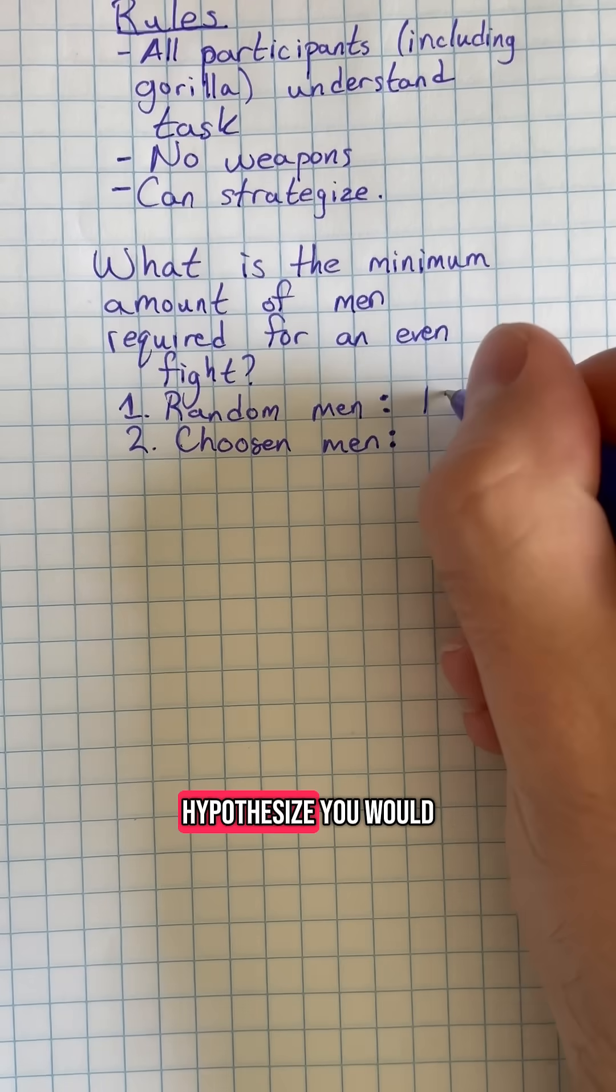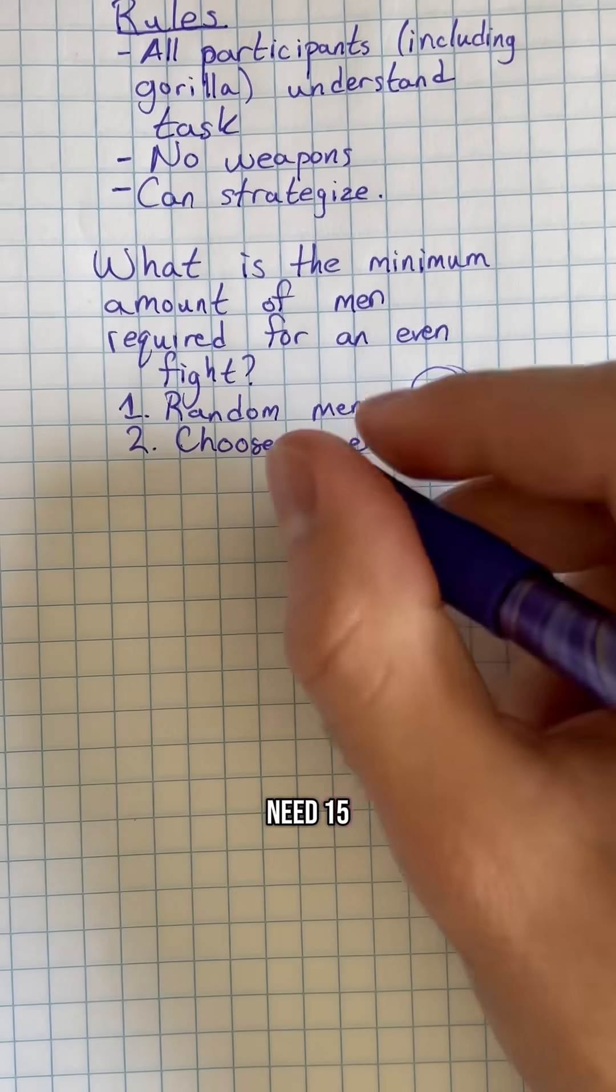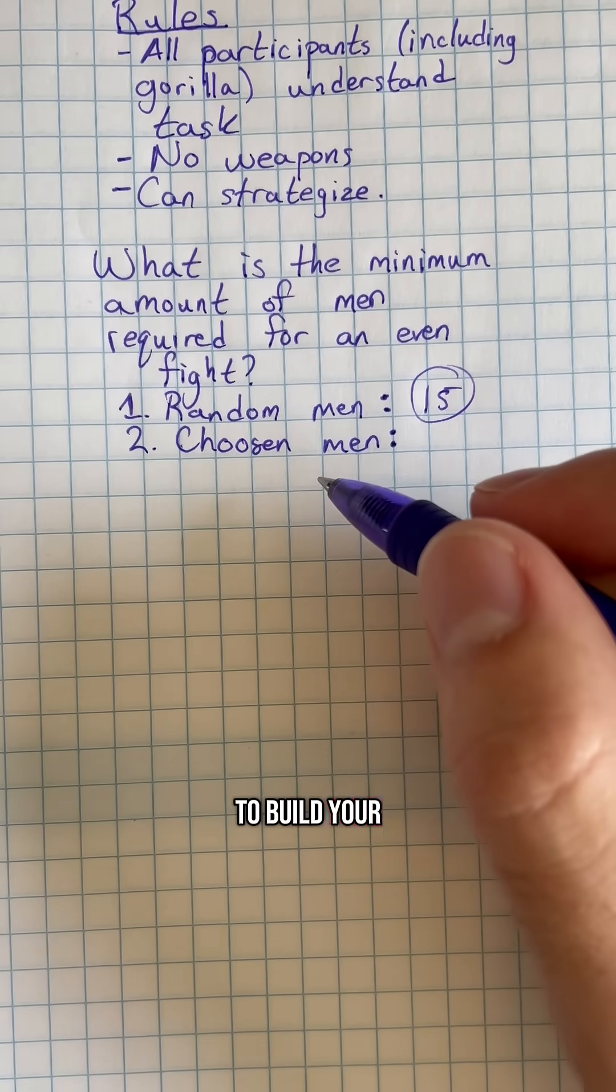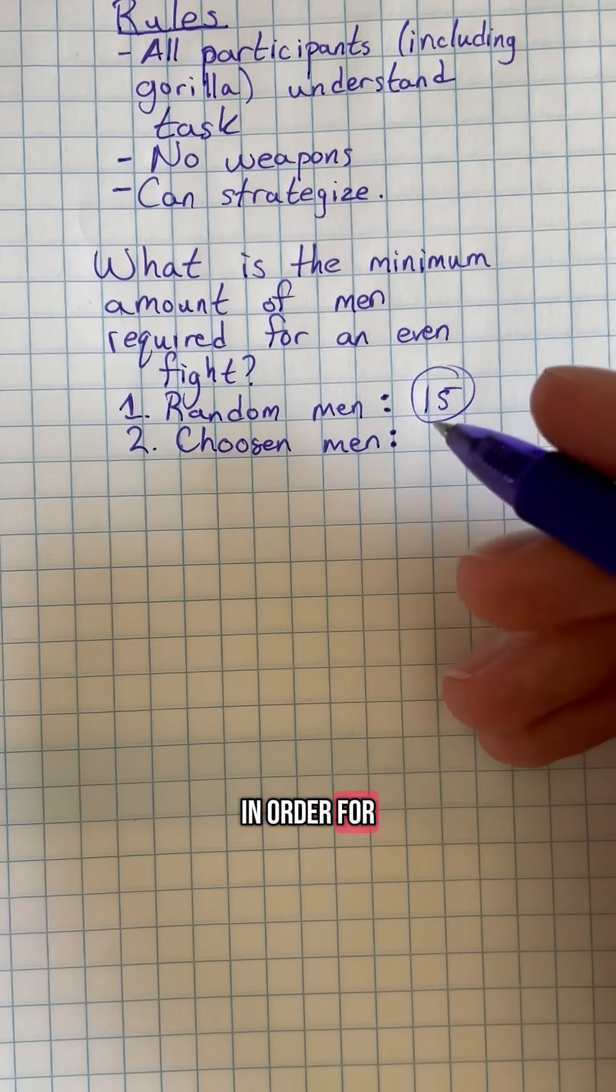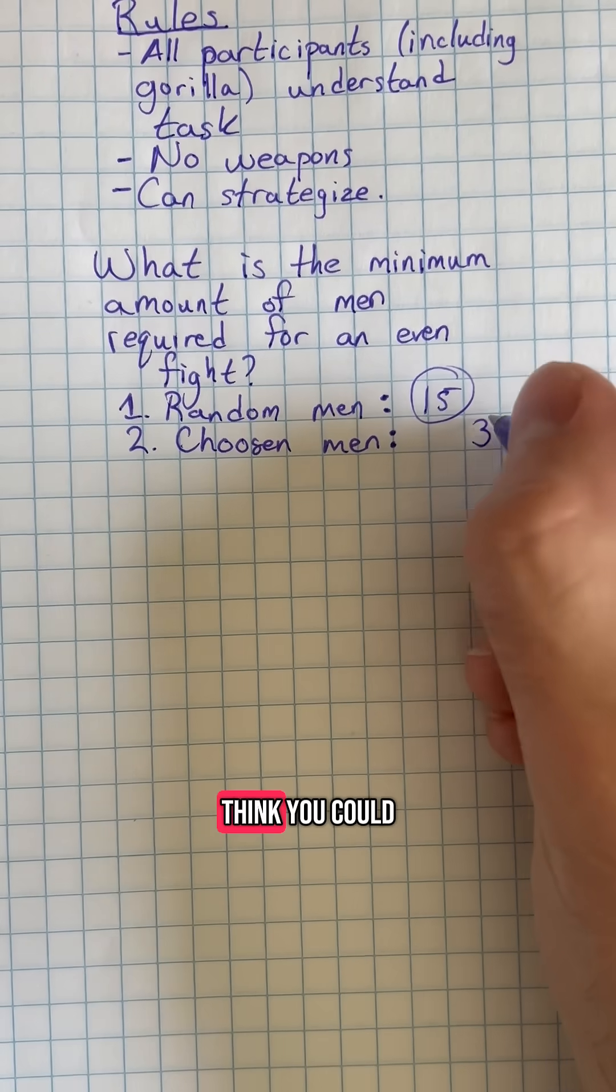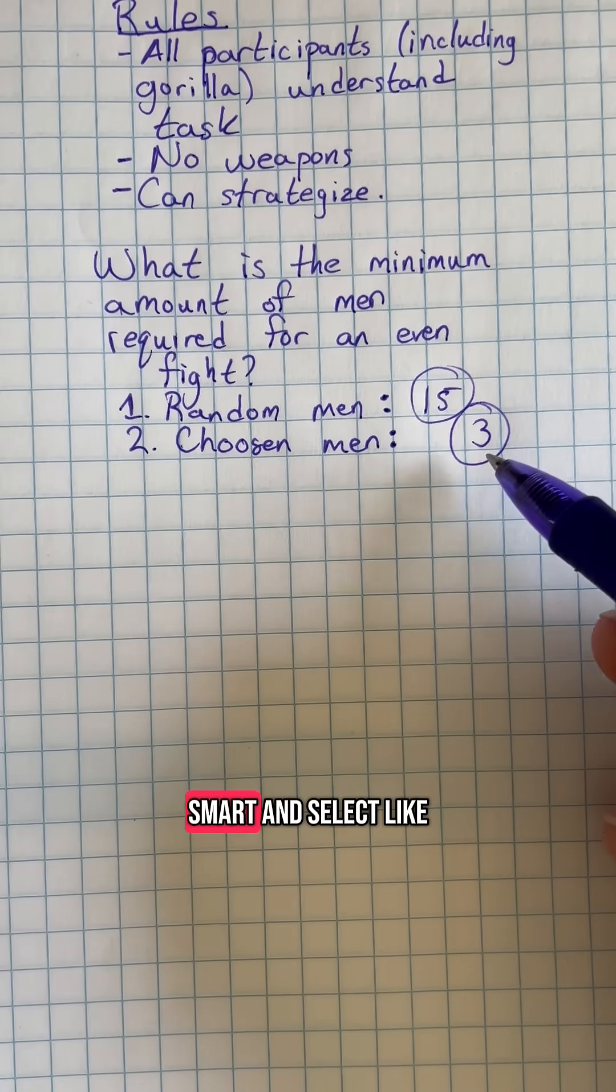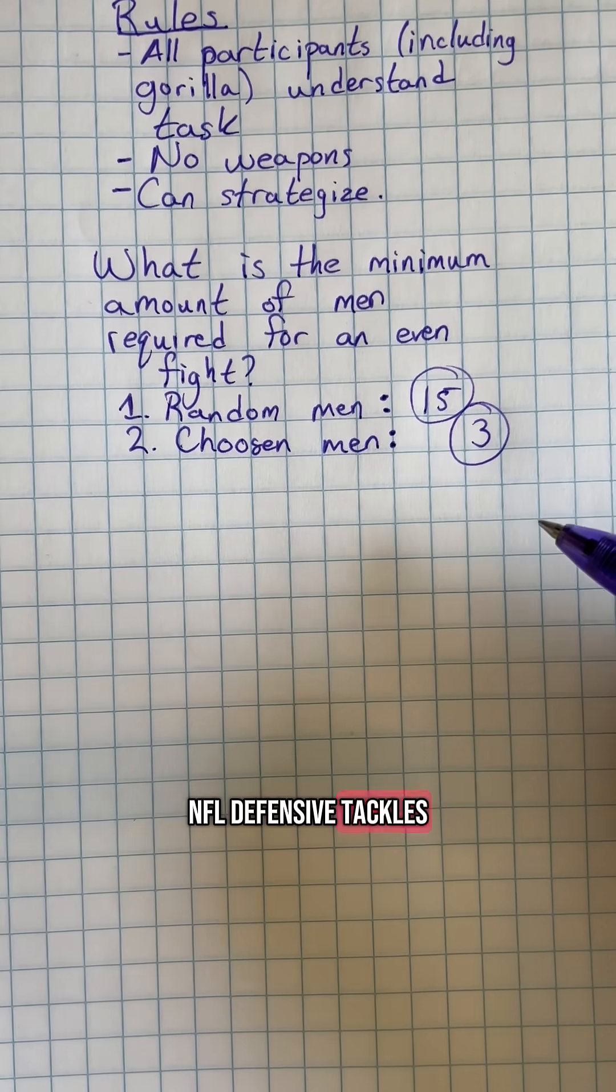and then chosen men. And if you were able to build your dream team of people, what would be the minimum amount of people required in order for it to be an even fight? In which I think you could get away with probably three, if you were to be very smart and select like NFL defensive tackles or something.